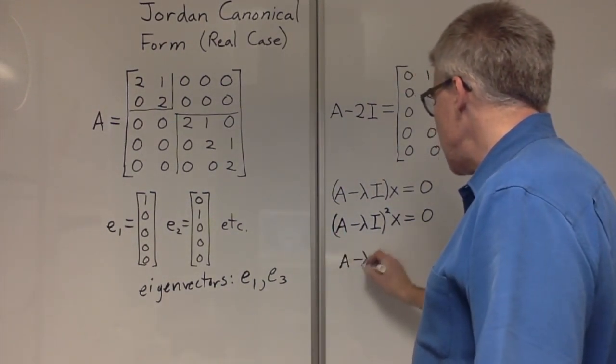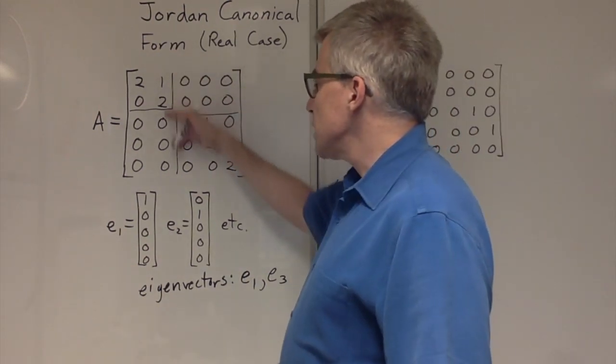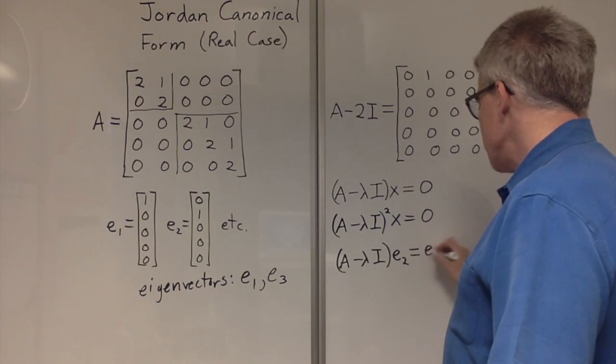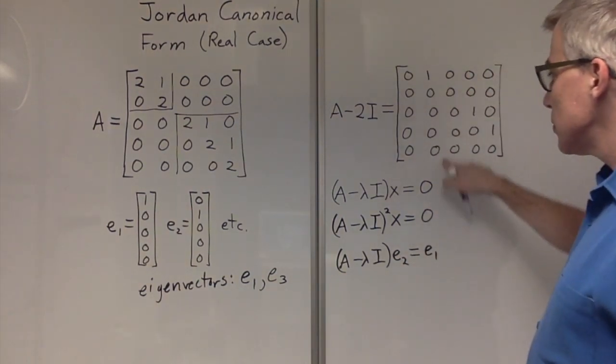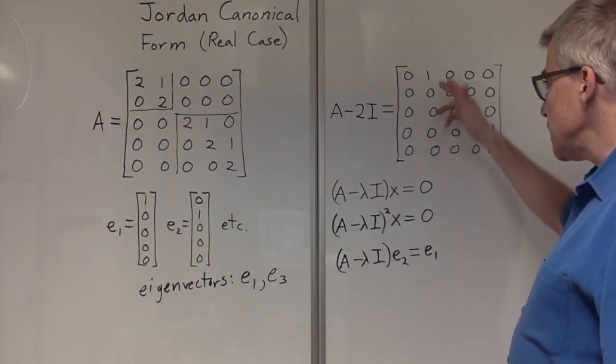A minus lambda I acting on E2 turns out to give E1. A minus lambda I acting on E2 gives E1.